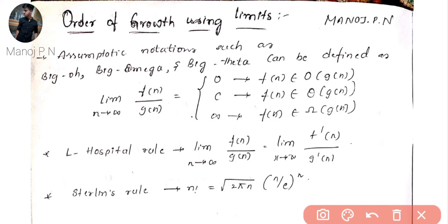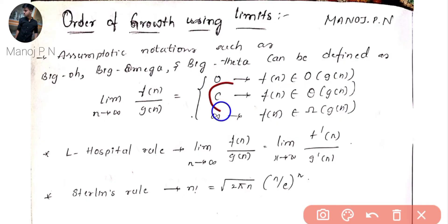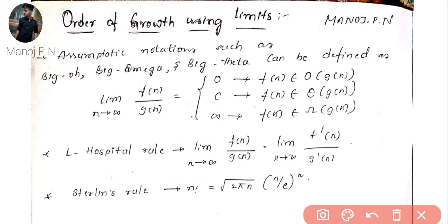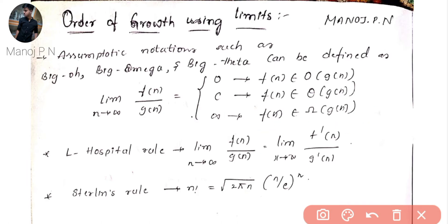divided by g(n). When it becomes zero, f belongs to O(g(n)). When it becomes some constant, f(n) belongs to Theta(g(n)). When it becomes infinity, f(n) belongs to Omega(g(n)). We're going to use two formulas: L'Hospital's rule and Stirling's rule.